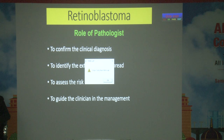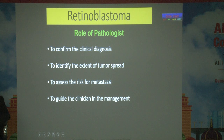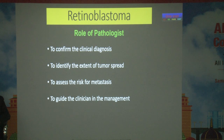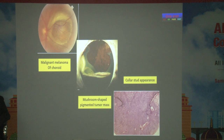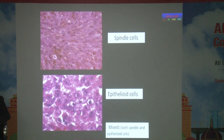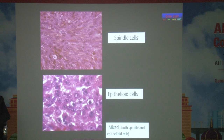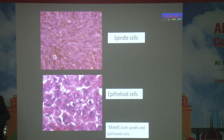The role of the pathologist is to confirm the clinical diagnosis, identify the extent of tumor spread, assess the risk for metastasis, and guide the clinician in management. This is the malignant melanoma of the choroid — a mushroom-shaped pigmented tumor mass with a collar-stud appearance. Histologically, spindle cells are tightly packed with insignificant cytoplasm and prominent nuclei. Epithelioid cells have a lot of cytoplasm with prominent nuclei. The mixed type has both spindle and epithelioid cells.